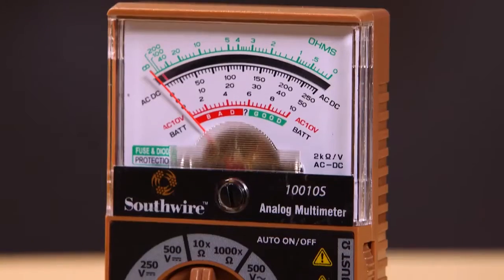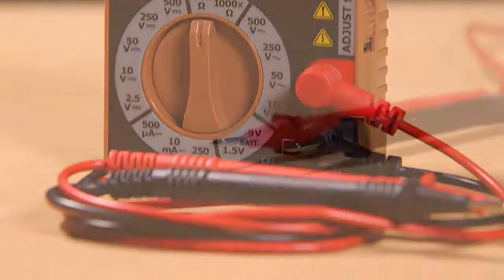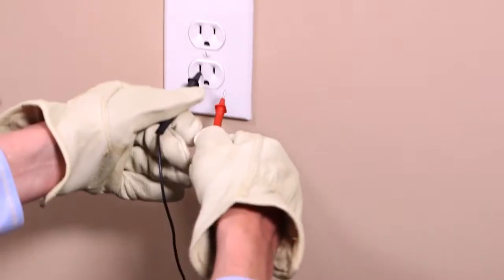The 10010S Analog Multimeter is ideal for basic circuit checks. It measures AC voltage for checking appliances and household branch circuits, such as outlets and lighting receptacles.